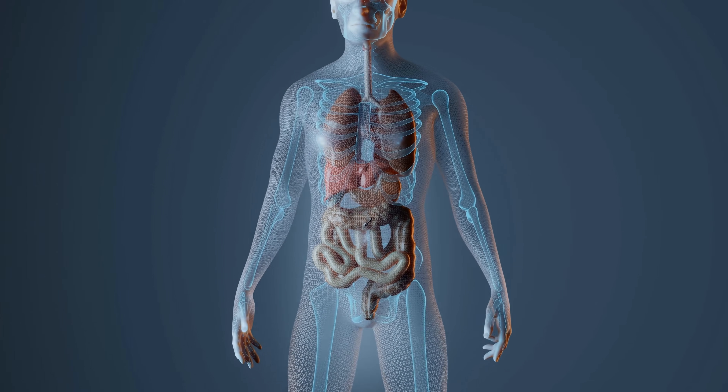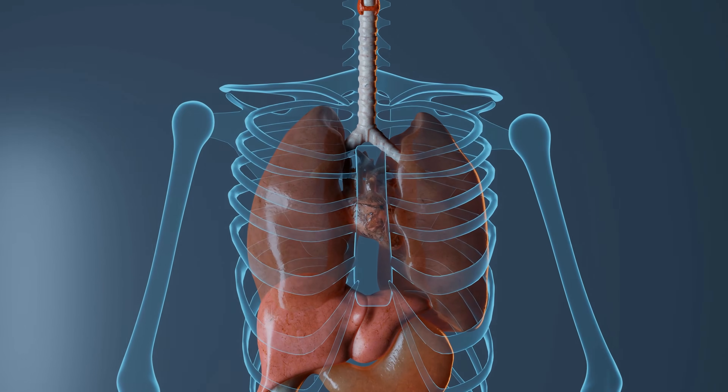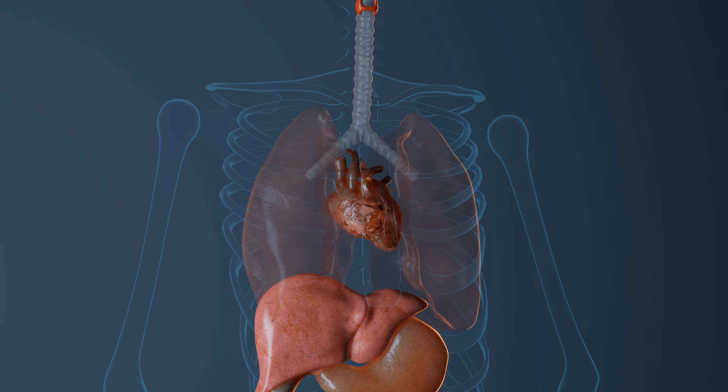When the heart doesn't rest well for whatever reason, we call that diastolic dysfunction. An average heart beats about 80 times a minute — that's about 4,800 times an hour, about 115,000 times in 24 hours, over 42 million times in a year, and over 3 billion times if you live about 72 years. So that's a lot of opportunities for the heart to rest in diastole, and it wants to do this well.